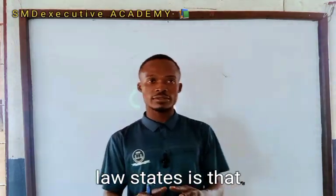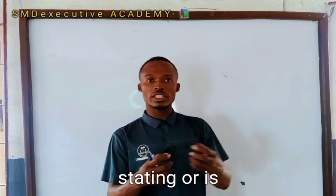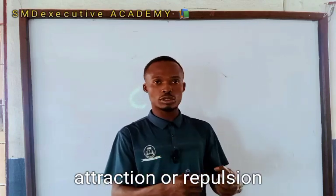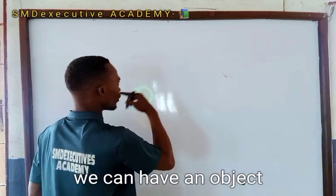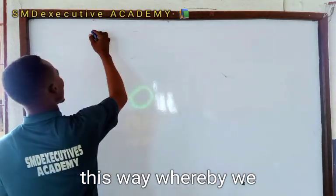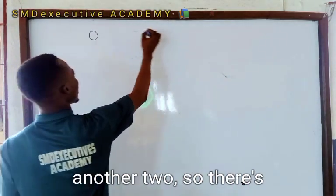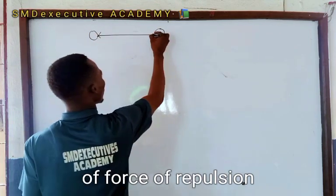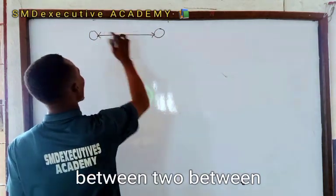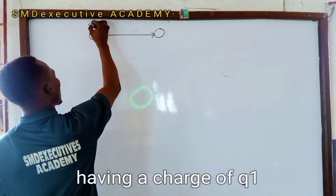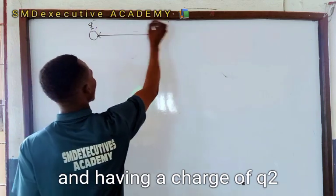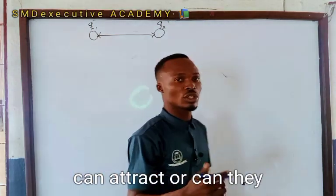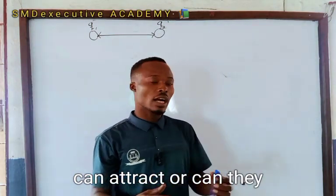What Coulomb's law states is that there is a force of attraction or repulsion between two objects. We can have object one and object two, and there is a force of attraction or force of repulsion between these two particles having a charge of Q1 and a charge of Q2.